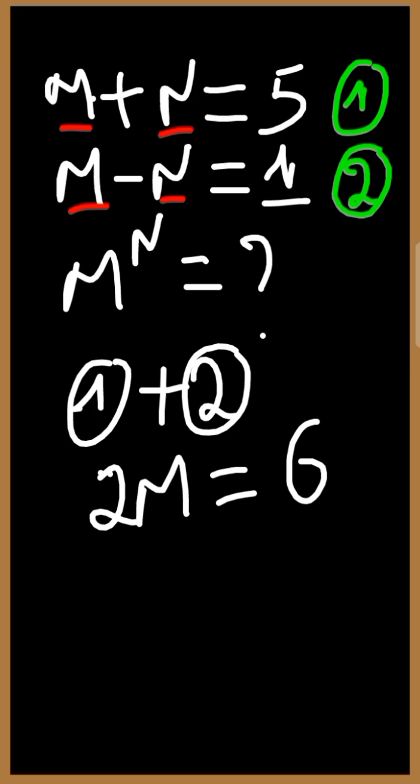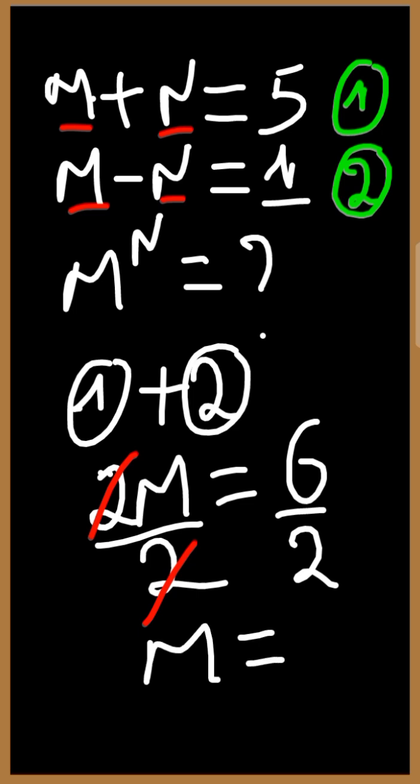Next, to get the value of M, we are going to divide both sides by 2. This will give us M equal to 6 divided by 2, which is 3. This is the value of M.